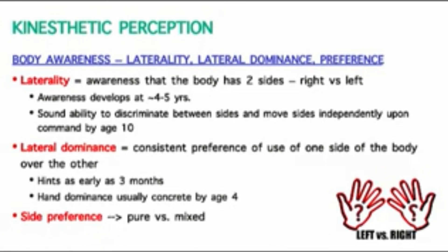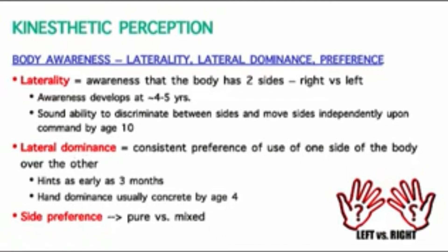If preferred parts are all on the same side, we call that pure dominance or pure preference. If preferred parts are on both sides, we call that mixed dominance or mixed preference. The sum of preferences kind of determines a person's overall lateral dominance.